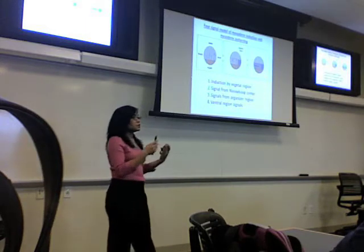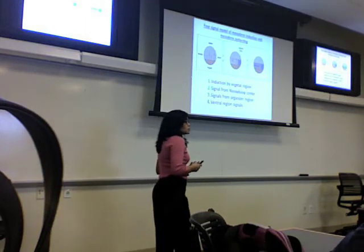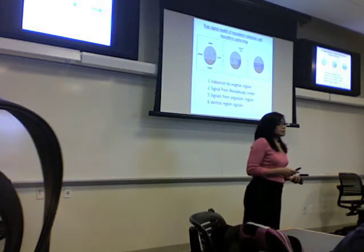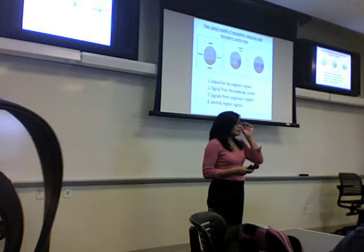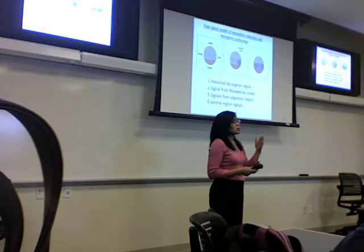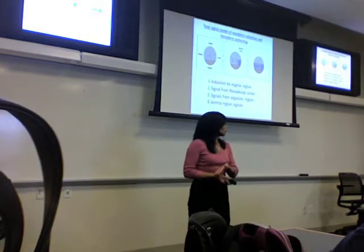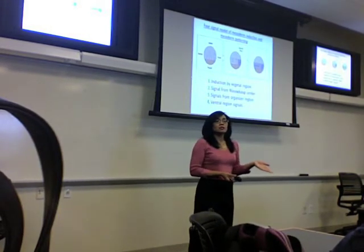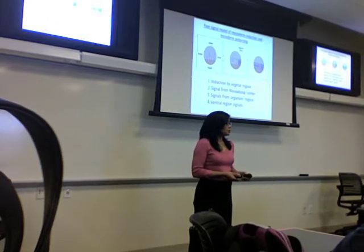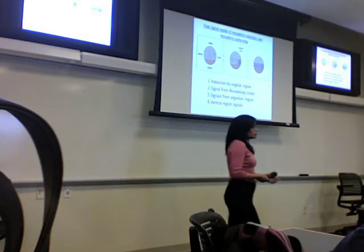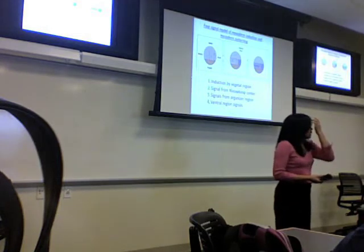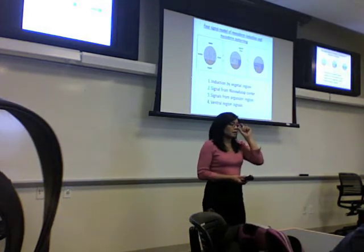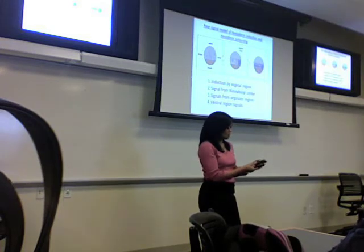You start to get mesoderm induced into different compartments. From our fate maps and specification maps, we know that the different parts of the mesoderm — dorsal mesoderm versus ventral mesoderm — can eventually develop into different tissue types. Their location in the embryo is important, so they need to be patterned early on so that the more mature animal will have all of its parts.